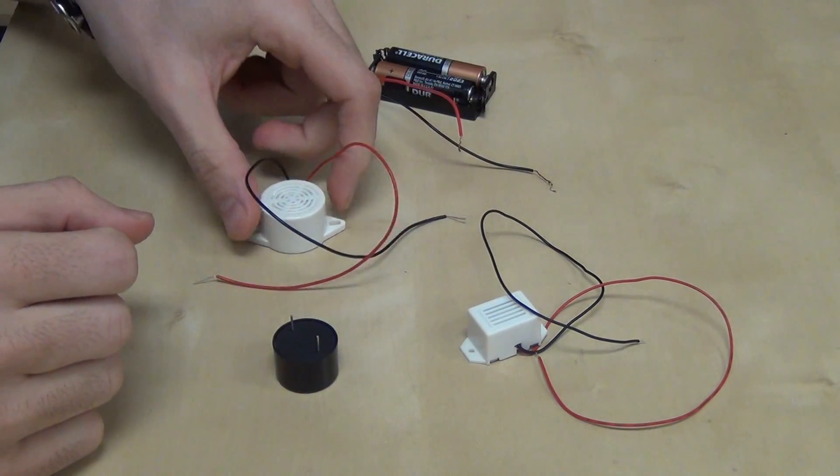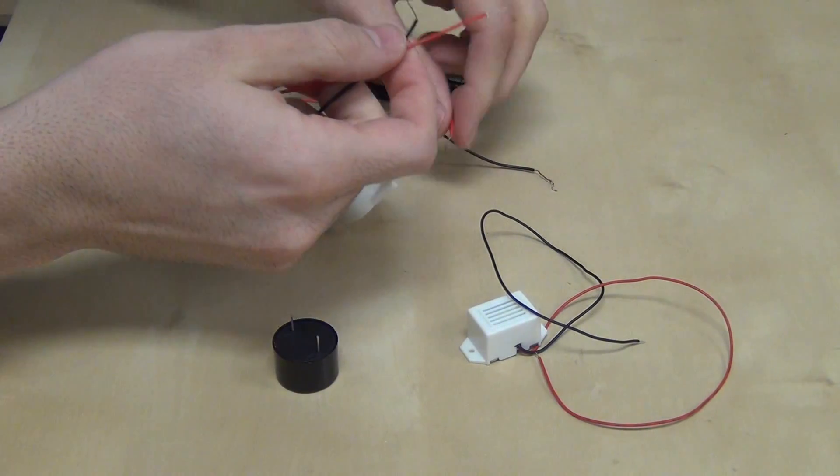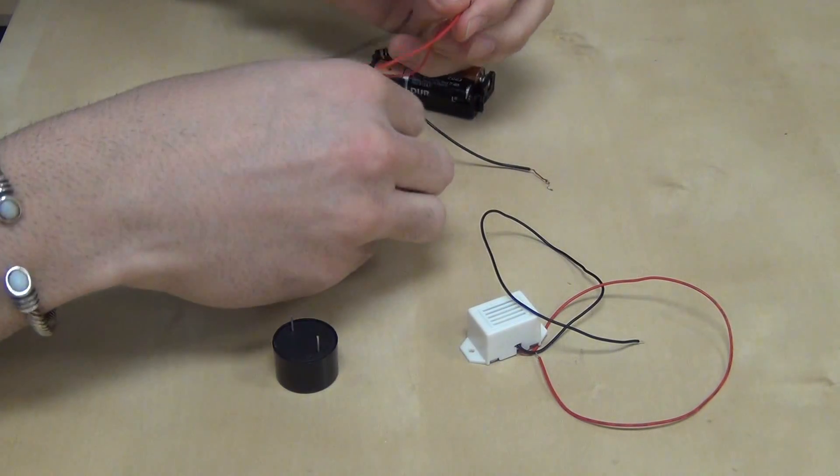The next one we have is the buzzer round, two volts up to six volts. Let's see how this one here sounds.